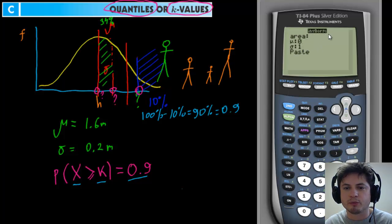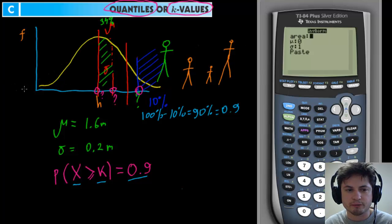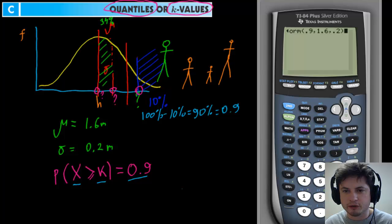When you click InvNorm you may see a menu or just a bracket. If you have the bracket, you need to enter values in order: area first, mean second, standard deviation third. The key thing is it always measures area from the left side. In our case the area is 0.9 — everything up to our cutoff point from the left. So you enter: 0.9 comma 1.6 comma 0.2, then press Enter.